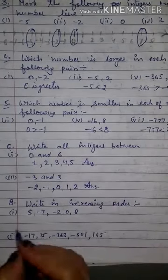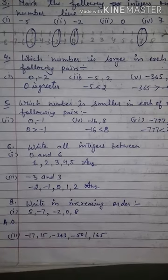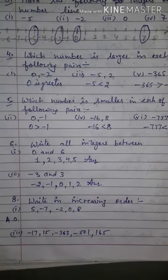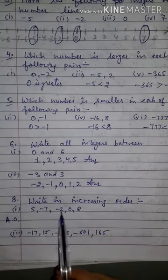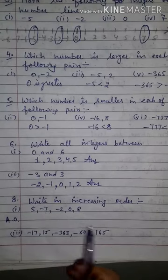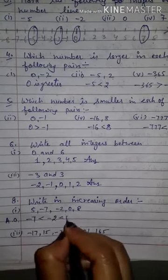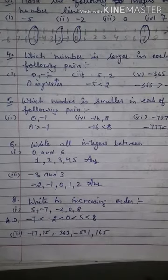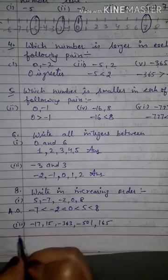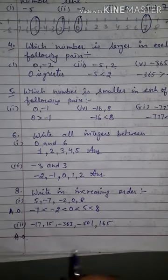Next, write in increasing order — that means ascending order. First, we write the smaller number. We know all positive numbers are greater than negative, and even 0 is greater than negative. So we compare minus 7 and minus 2 — minus 7 is smaller, so we write minus 7 first, then minus 2, then 0, then 5, then 8. Obviously, 5 is smaller than 8.